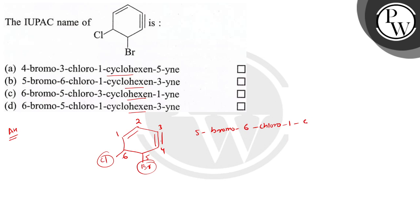The triple bond is at position 3, so it is 3-yne. So this is the correct IUPAC nomenclature and option B is correct. I hope you understood well.